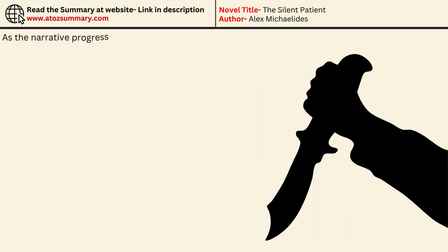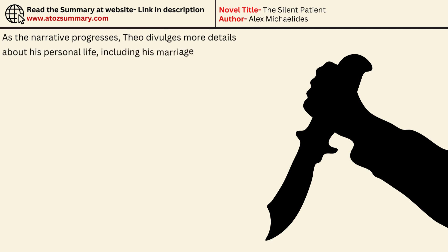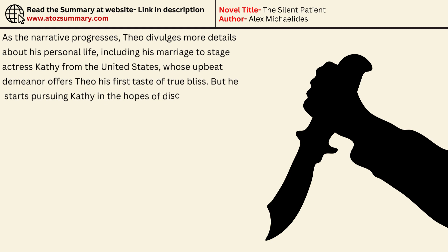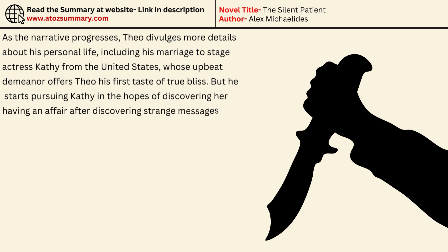As the narrative progresses, Theo divulges more details about his personal life, including his marriage to stage actress Kathy from the United States, whose upbeat demeanor offers Theo his first taste of true bliss. But he starts pursuing Kathy in the hopes of discovering her having an affair after finding strange messages on her laptop.